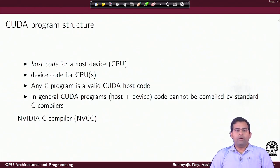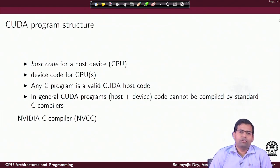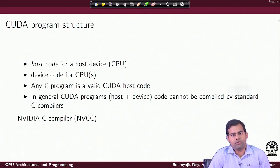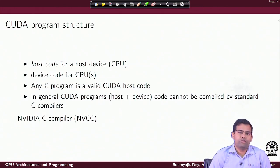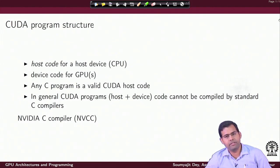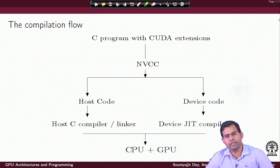The way a basic CUDA program is structured is as follows. There is host code which executes on the CPU, and there is device code which executes on the GPU. Technically speaking, any C program is a valid CUDA host code — it is code that can execute on a CPU. CUDA programs consisting of host plus device code cannot be compiled by any standard C compiler. For this purpose, we require the specific NVIDIA compiler, that is the NVCC compiler — the NVIDIA C compiler.